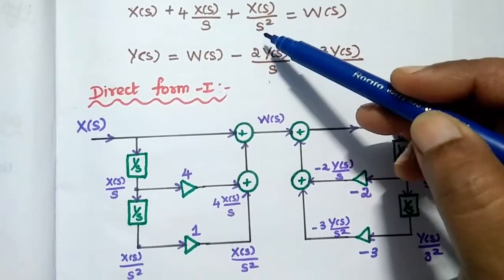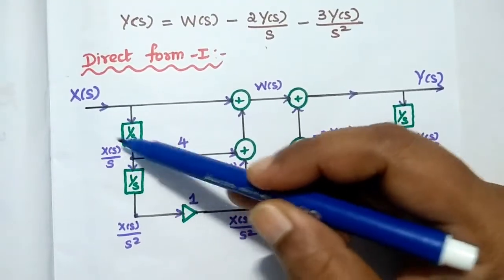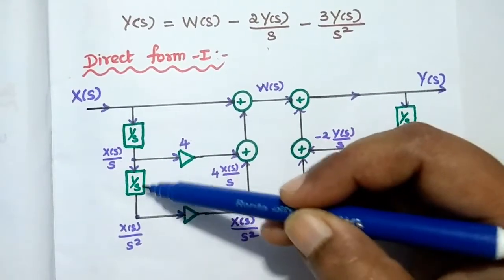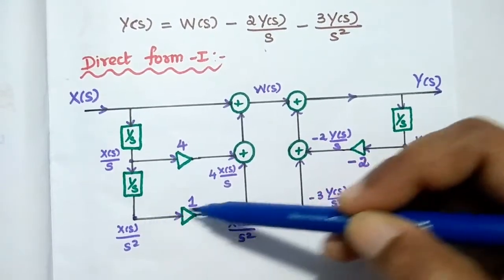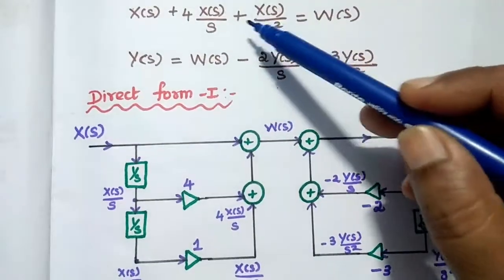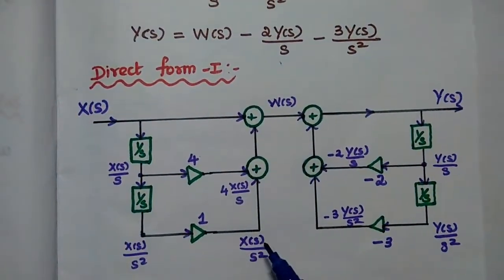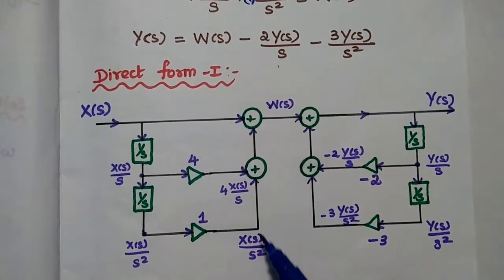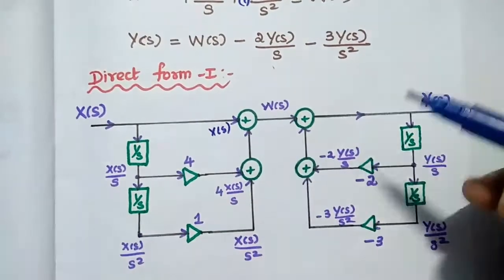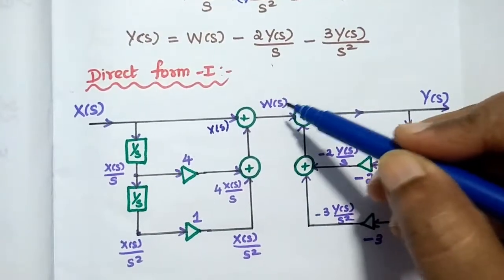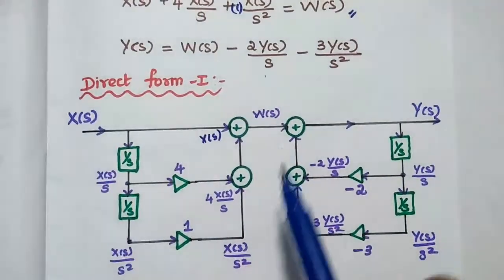The next term is X of S by S squared, which can be obtained by giving X of S by S to another 1 by S block. At that point we get X of S by S squared, which is given to a multiplier of 1. Then X of S is added directly. All these values — X of S, 4X of S by S, and X of S by S squared — are added together at the summing junction to get W of S. The first equation circuit is now drawn.